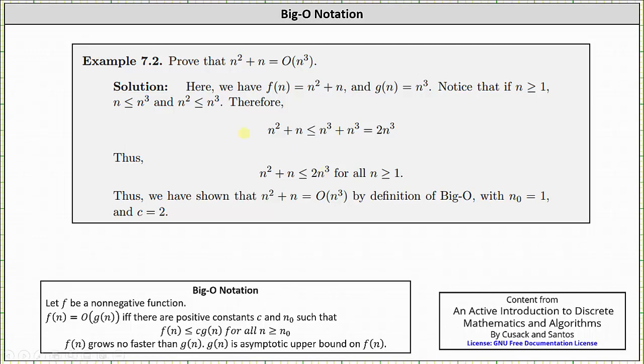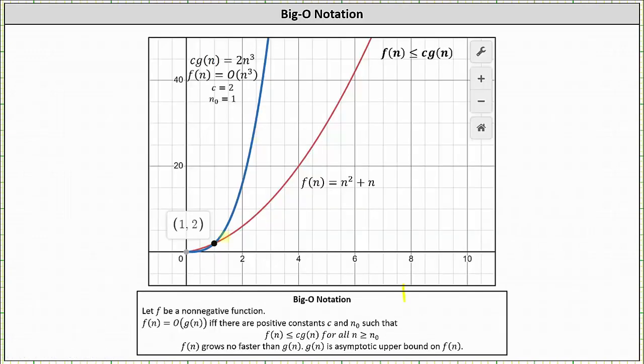Before we go, let's take a look at this graphically. In red, we have the graph of the given function f(n). In blue, we have the graph of c times g(n) equals 2n³.